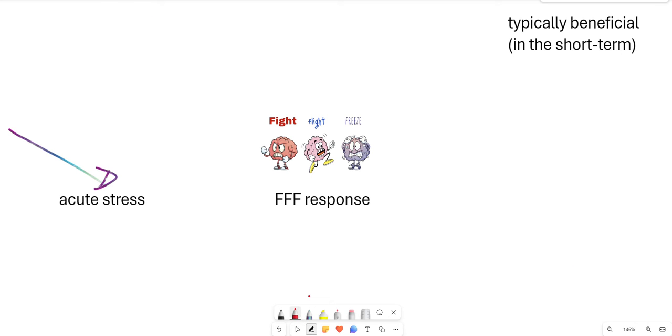Now, an acute stressor will trigger the triple F response via the sympathetic nervous system activation. And that will typically be beneficial because whether we confront the threat, whether we evade it or whether we play dead, basically that response will enhance our performance, enhance our ability to survive. And we generally won't pay a heavy price for that. We'll basically recover. The body will return to a homeostatic state fairly rapidly.